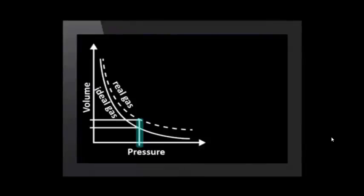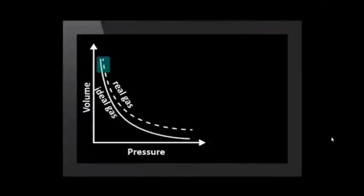So at a certain pressure, a real gas's volume is actually bigger than what the ideal gas equations predict. Under most conditions, the spaces between molecules are much larger than the sizes of the molecules themselves so that the error from the simplification is negligible. But at high pressures, the gas is compressed so much that the volume of the molecules are significant compared to the spaces.